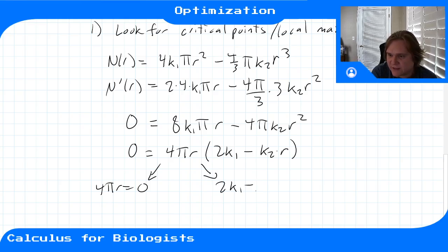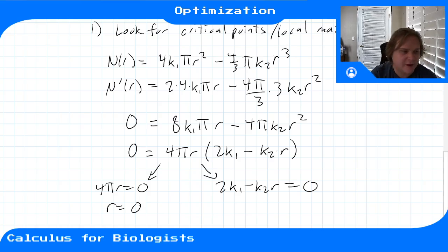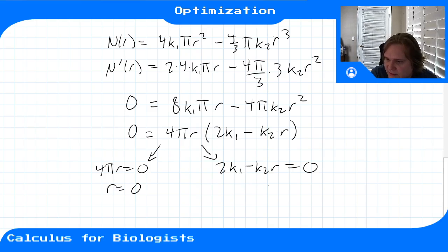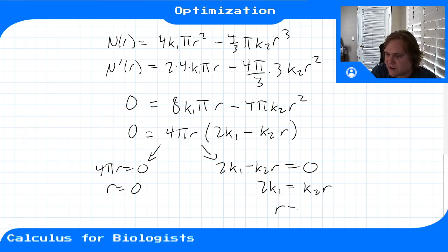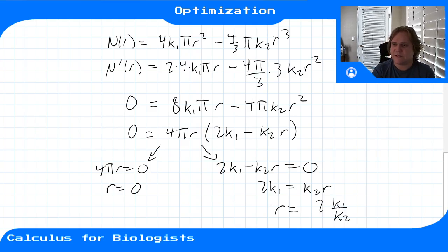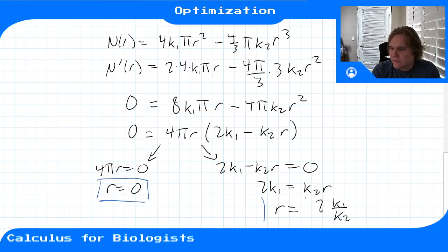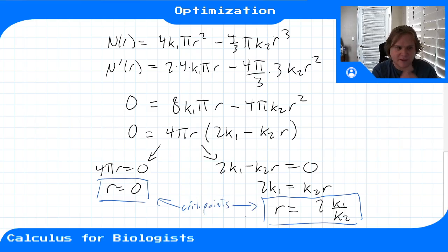Setting each factor to zero gives two critical points: 4πr = 0 gives r = 0, and 2k1 − k2r = 0 gives r = 2k1/k2. So our two critical points are r = 0 and r = 2k1/k2. Now we need to figure out which one is the maximum.